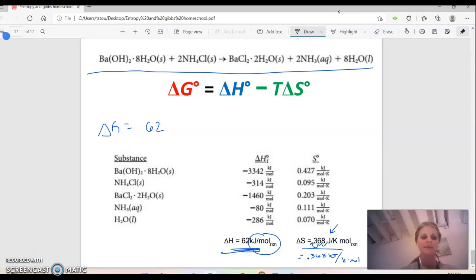That's going to be a lot easier. So I've got my H is 62 minus T, and then my change in S. My change in S is going to be that 0.368.